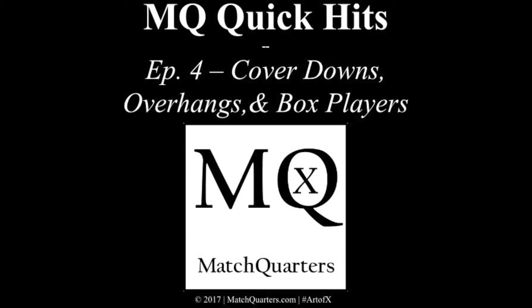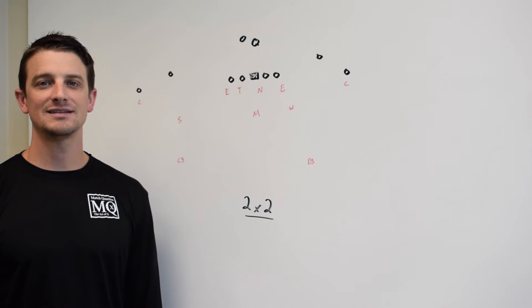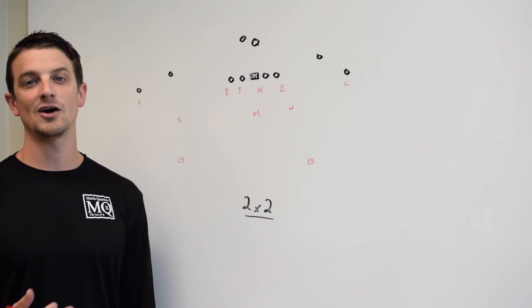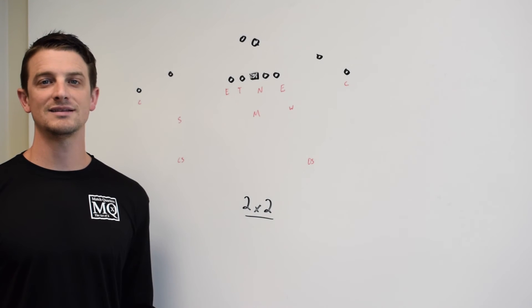Hi, I'm Cody Alexander with Match Quarters bringing you the latest episode of Match Quarters Quick Hits. Today we're going to be talking about cover downs, overhangs, and what is a box player.